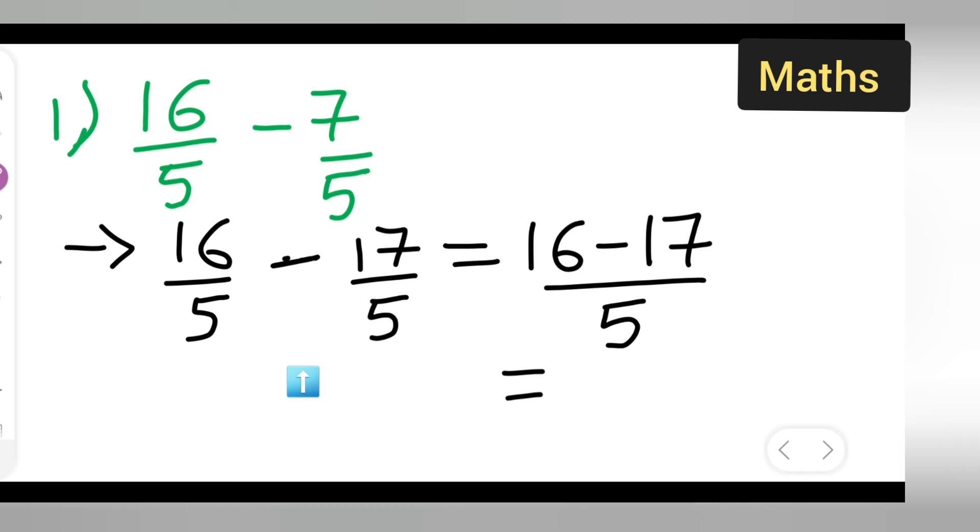What I am going to get is now 16 minus 7. It is 7, right? This is 7, not 17. This is 7. Write down 7 over here. So 16 minus 7 will give you 9 upon 5.